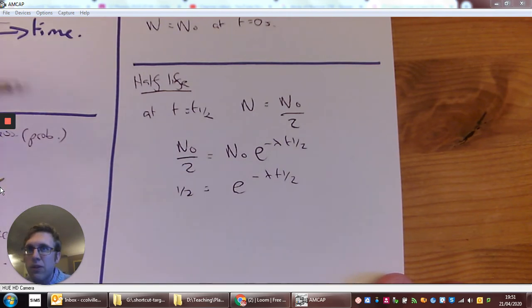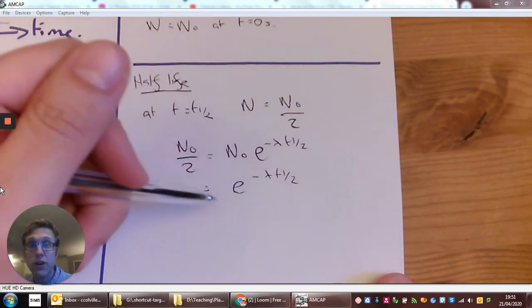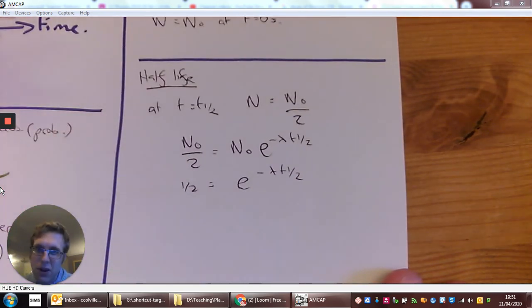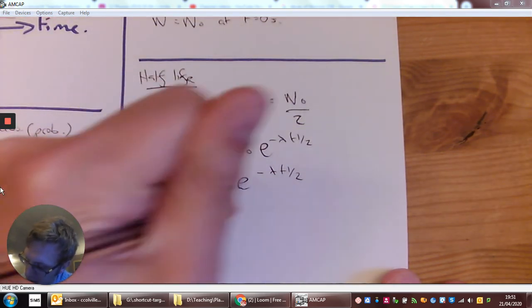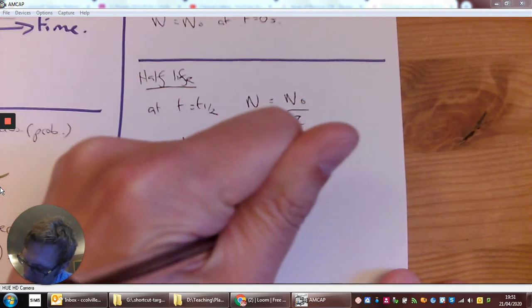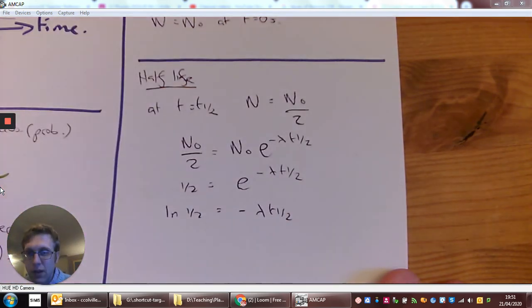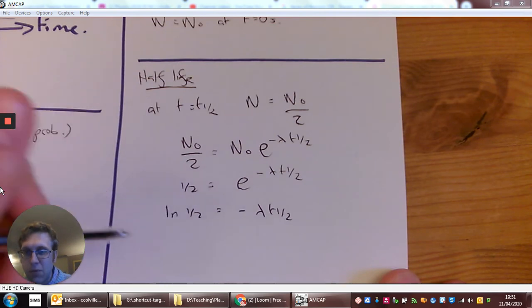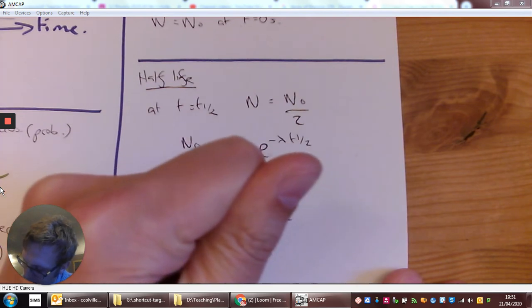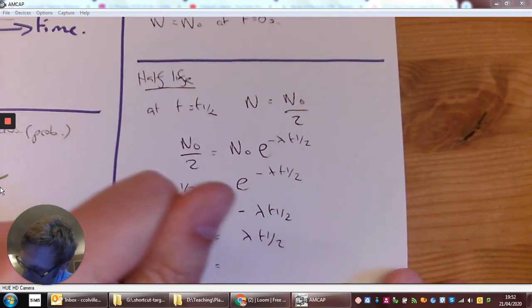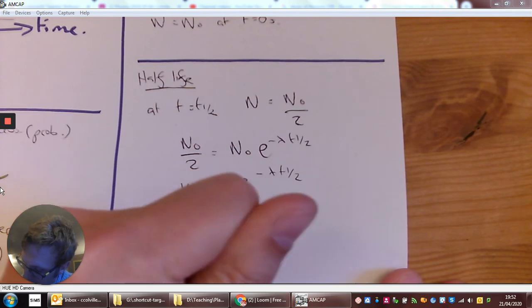In the same way that division is the opposite of multiplication, the opposite function for the exponential function is what we call logarithms. So log of a half is equal to minus lambda t half, the half-life. One of the joys of logs is there's lots of rules about things. So rather than writing log of a half, I can write minus log two. So this then becomes log two equals lambda t half. So if you want to work out the half-life, it's log two over lambda.